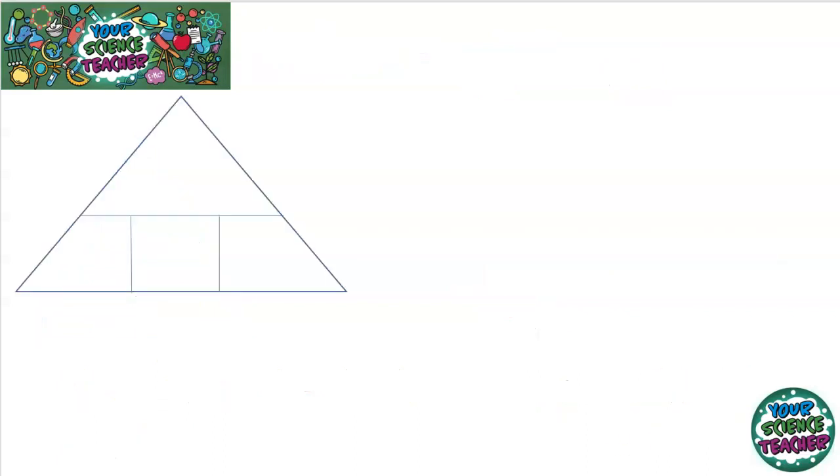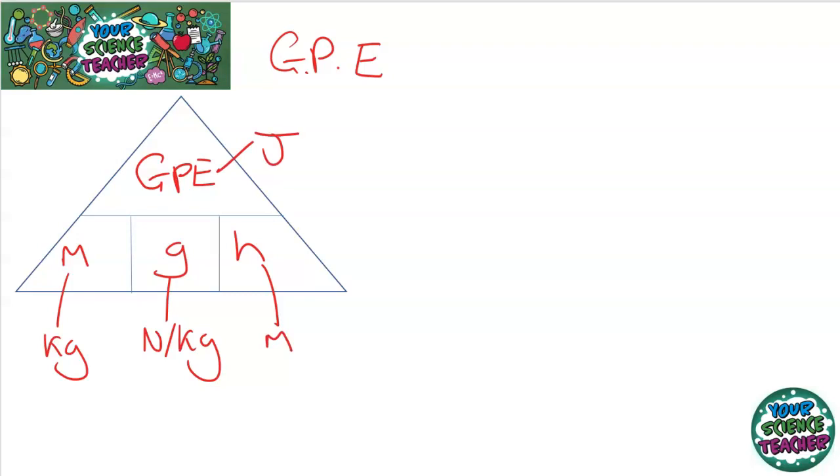We're going to look at gravitational potential energy now. And we're going to look at how to calculate gravitational potential energy to be specific. We're going to use the calculation triangle again, which has GPE on top. Then we have mass, gravity, and height on the bottom. Mass is measured in kilograms. Gravity is measured in newtons per kilogram. And height is measured in metres. And gravitational potential energy, like all energies, is measured in joules.